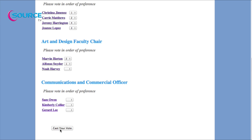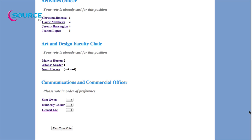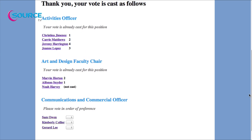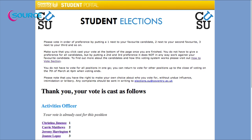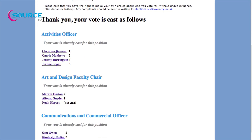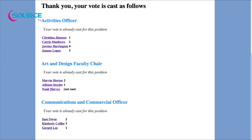Please put the number one next to your first choice, a number two against your second choice, and continue numbering all the candidates under that post, or until you do not want to vote anymore. There will be an extra option called 'Reopen Nominations' on your ballot paper — please vote for this option if you feel there are no suitable candidates. You do not have to vote for all positions at once; you can log back in later and vote for any positions you haven't already voted for, but you cannot change your preferences on ones you have already voted for.